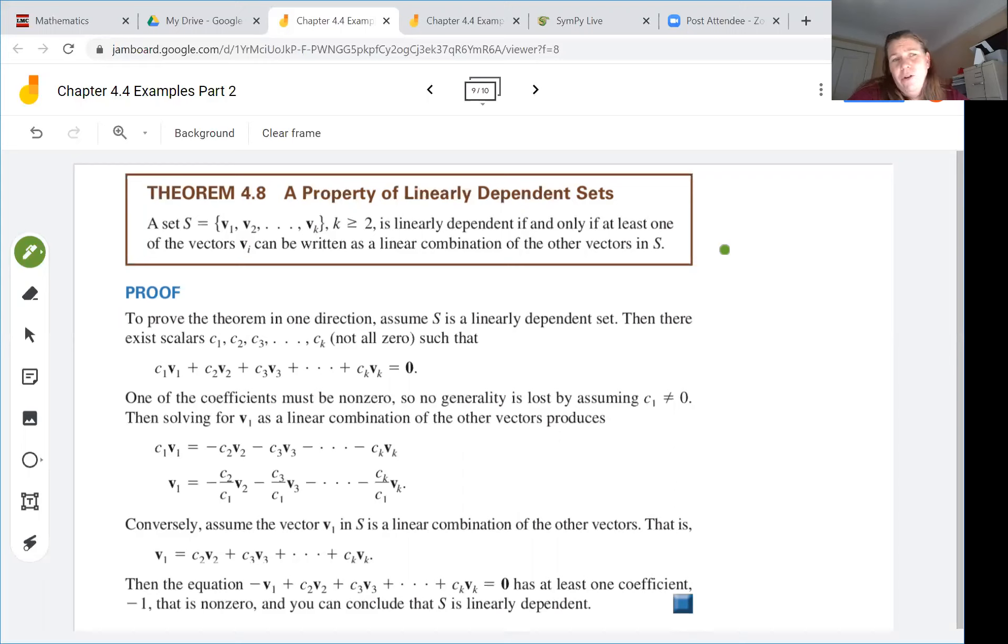So we want to prove this in all cases. To prove the theorem in one direction, when we say one direction we mean the forward direction or the backwards direction because this is an if and only if statement. So we are going to assume that S is a linearly dependent set, so we call this a forward direction because we said linearly dependent if and only if.